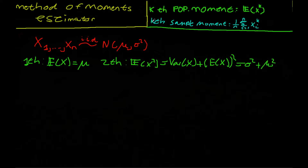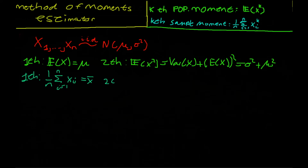Now we've calculated the first and second population moment, and we'll calculate the first and second sample moment. The first sample moment is given by 1 divided by n times the summation from i equals 1 to n of x_i raised to the power 1, which equals the sample mean, denoted x-bar. The second sample moment is 1 divided by n times the summation from i equals 1 to n of x_i squared.